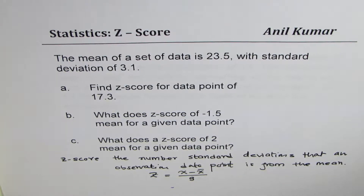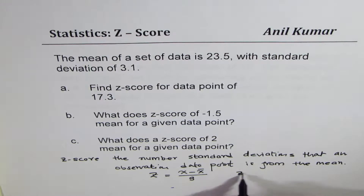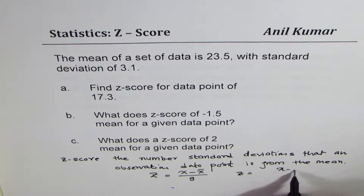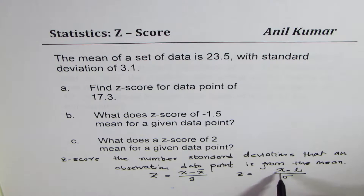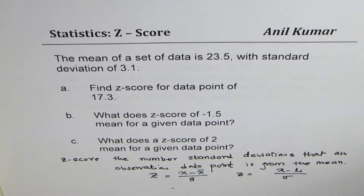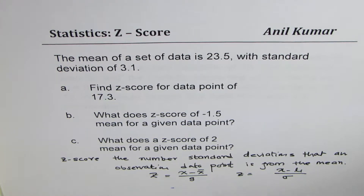For a population, z-score equals x minus mu over sigma, the standard deviation. Either way, it is the distance away from the mean divided by the standard deviation — that's so simple. Now let's answer the questions.